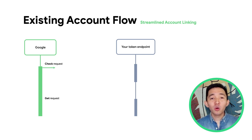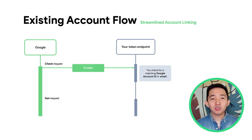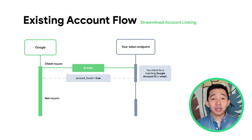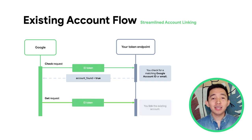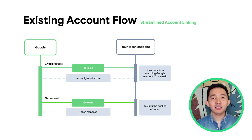To start, Google sends a check intent request with the ID token, which includes name, email, and profile picture. With this, you'll check to find a matching Google account ID or email. In this case, you found a match, so you return account found as true. Next, Google will send a get intent request that will link the existing account on your service with the Google account and return the access and refresh tokens.